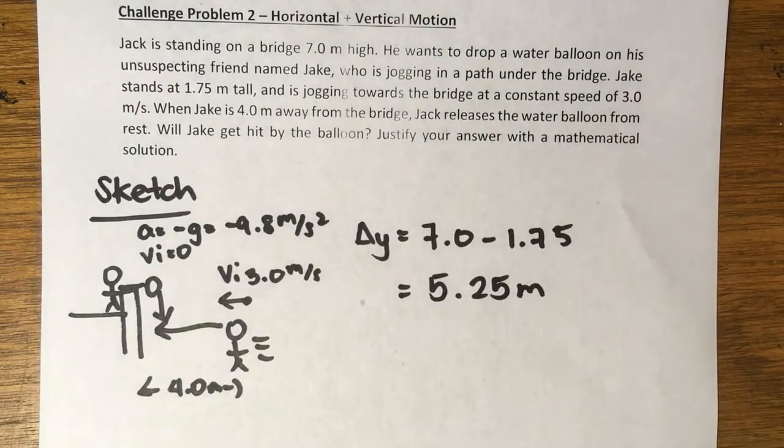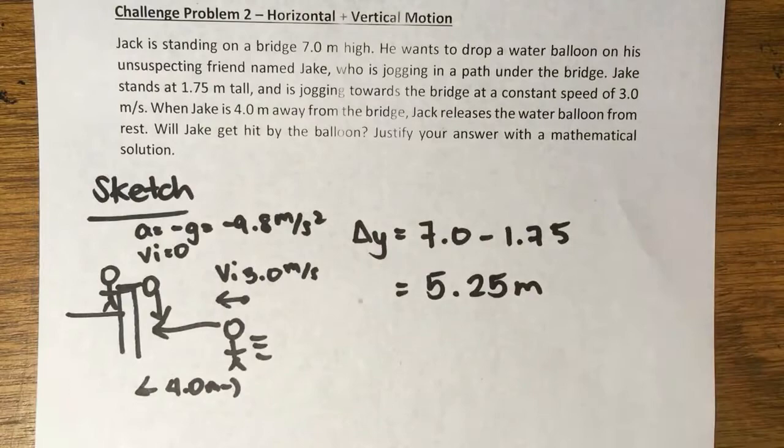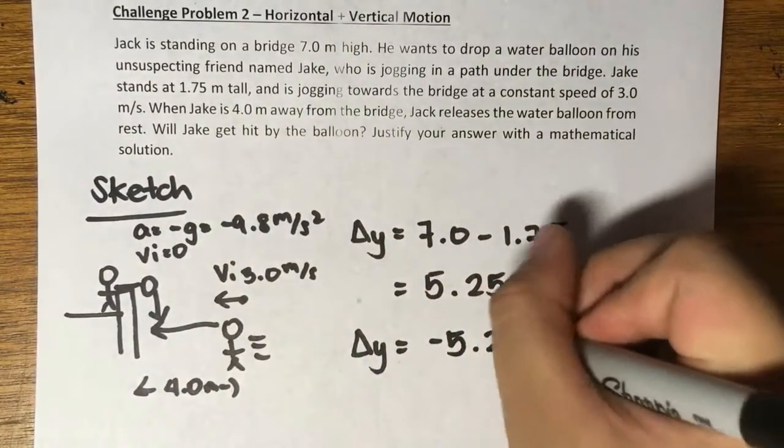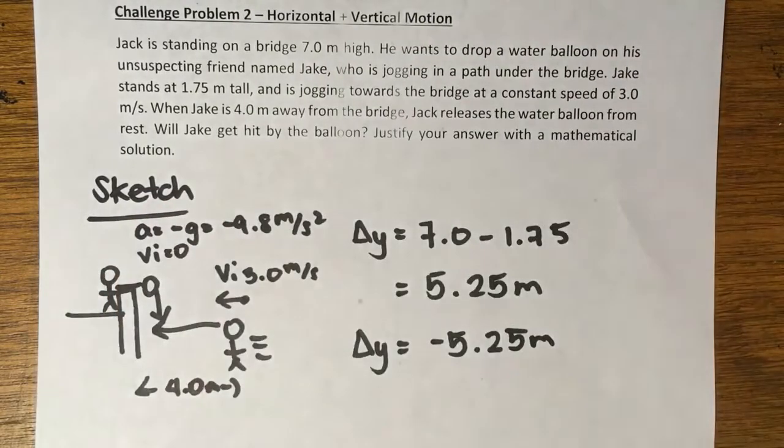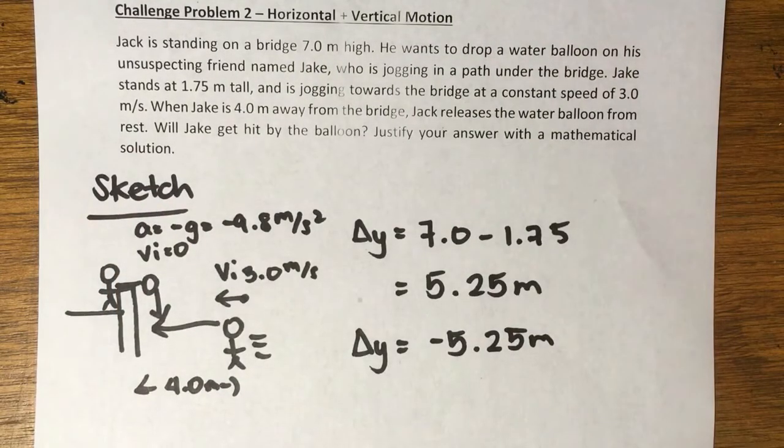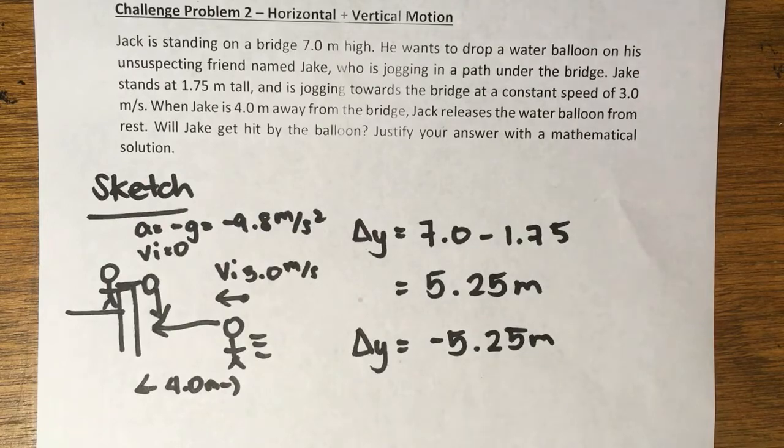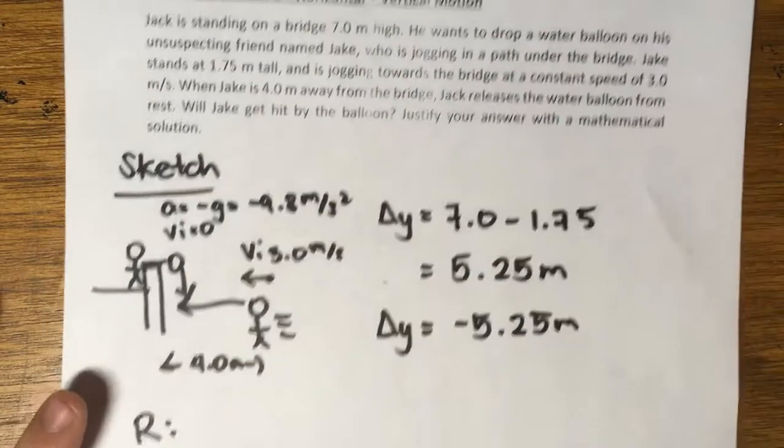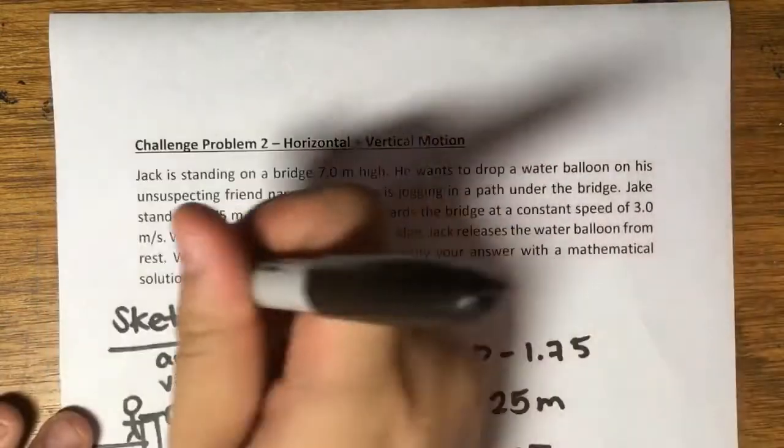If we subtract this, we're going to get around 5.25 meters. That's how much the water balloon will travel as it goes to the bottom. However, we know that it is negative because your water balloon goes downwards. It's a downward motion and therefore it is negative. So this is the given.